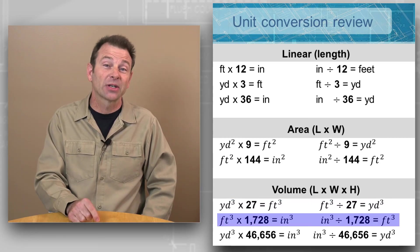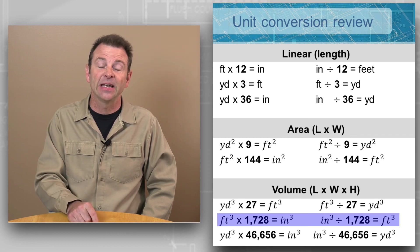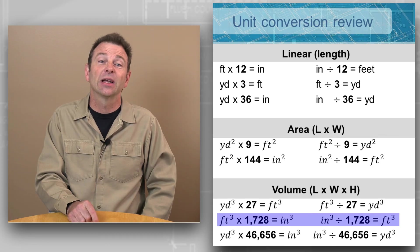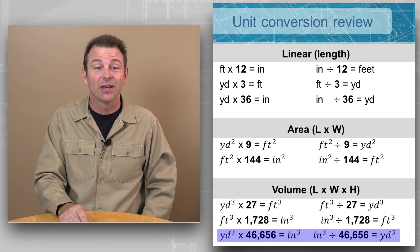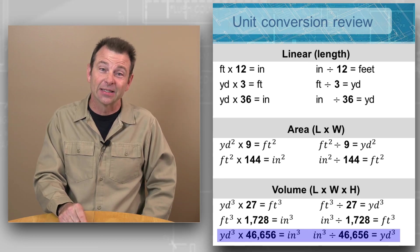That's because there are 27 cubic feet in every cubic yard. When we're talking about cubic feet to cubic inches or cubic inches to cubic feet, we're going to use a factor of 1,728. This number is the number of cubic inches in every cubic foot.